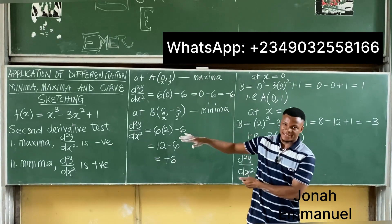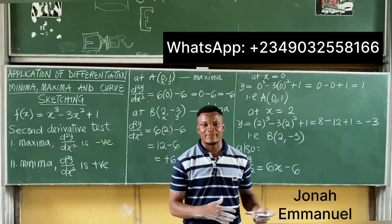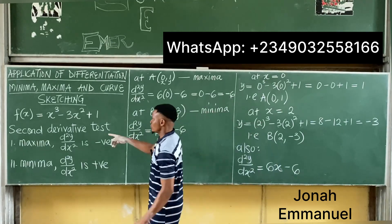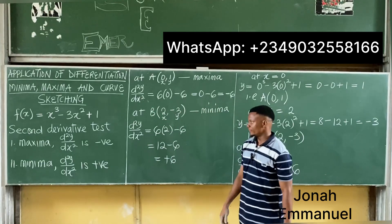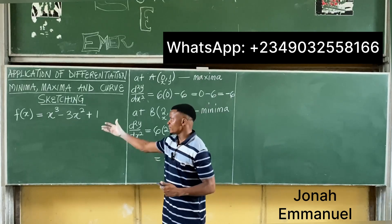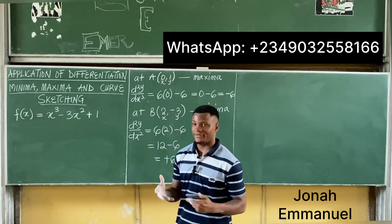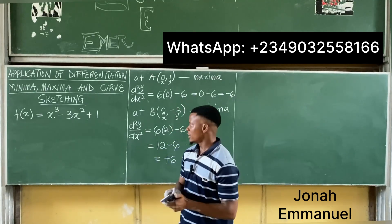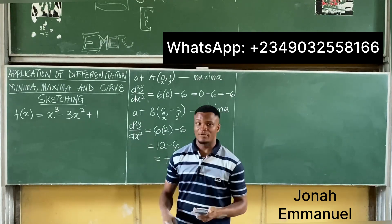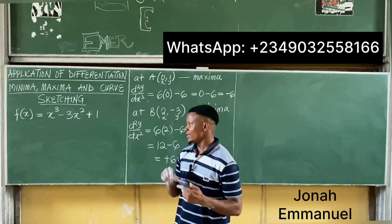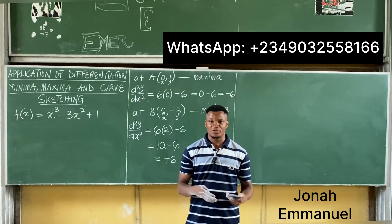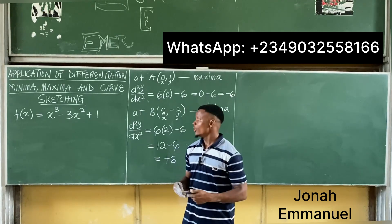I've gotten one aspect — finding minima and maxima. I need one more aspect to sketch my curve, and the second aspect is to find the roots of the equation. I'll find the roots using a calculator. I'm going to leave a link in the description of this video to a tutorial on how to solve this using a Casio calculator.